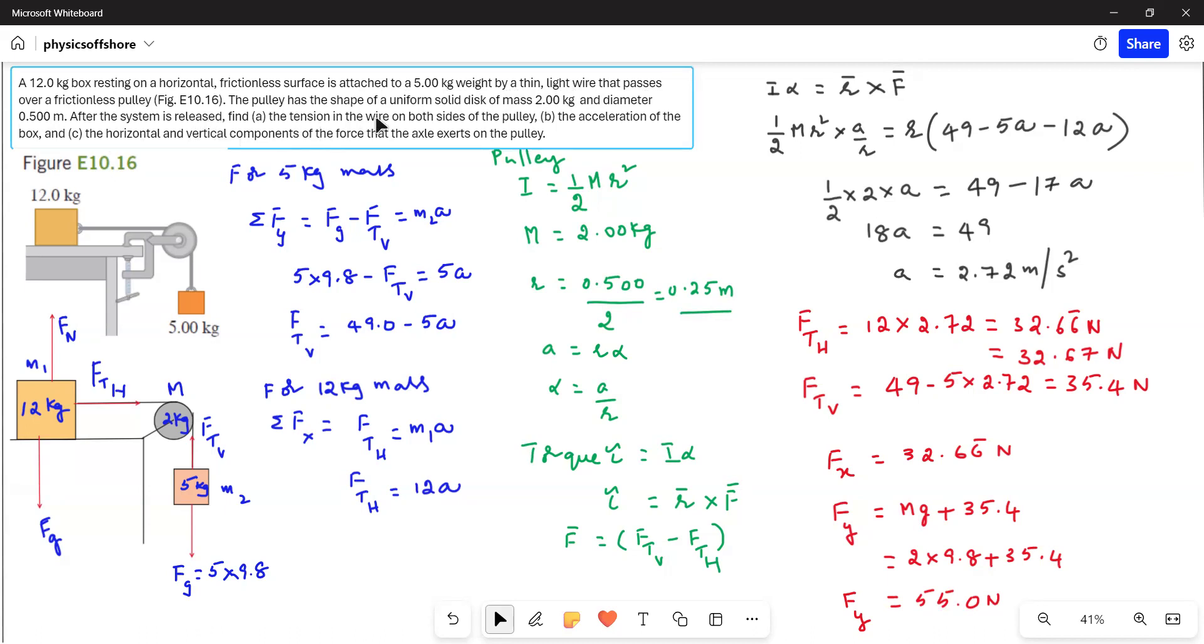After the system is released, find: the tension in the wire on both sides of the pulley, the acceleration of the box, and the horizontal and vertical components of the force that the axle exerts on the pulley.